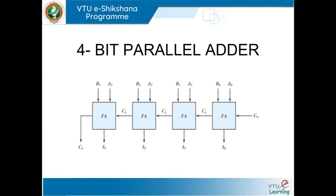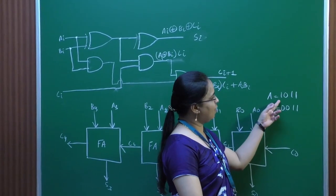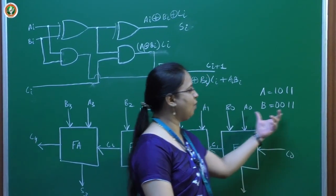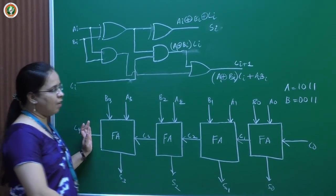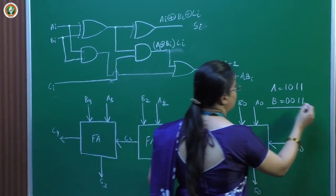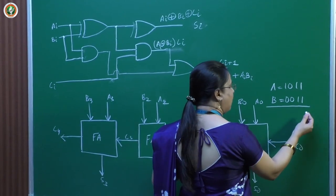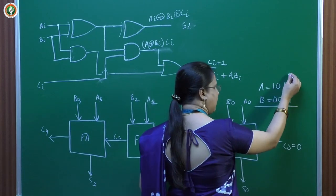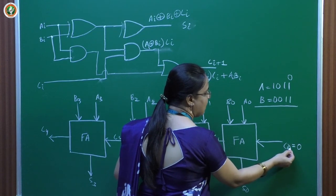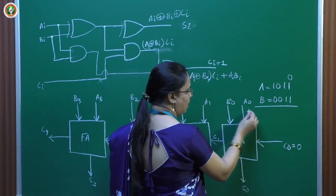In the previous class, I mentioned there is a disadvantage with the 4-bit parallel adder. Let us do a quick revision of that disadvantage using an example. Let us take A = 1011 and B = 0011. We want to add these two 4-bit numbers using the 4-bit parallel adder designed in the previous video. We always start adding from the rightmost position. We assume the carry into the first bit, C0, is 0, so with C0 = 0, A0 = 1, and B0 = 1.